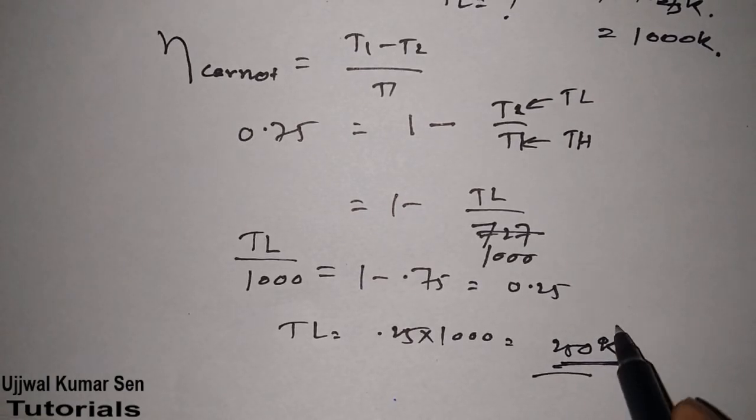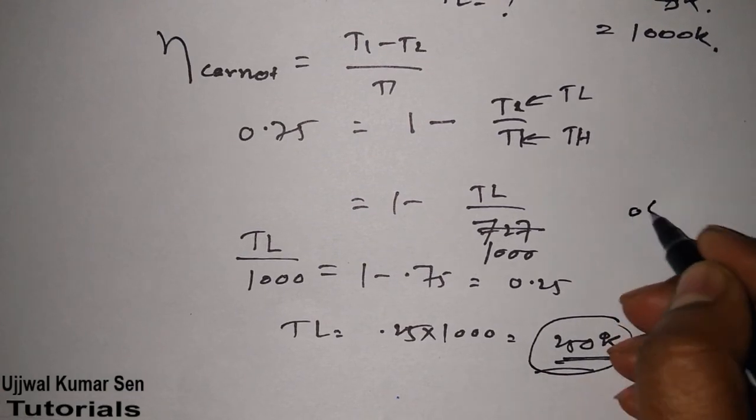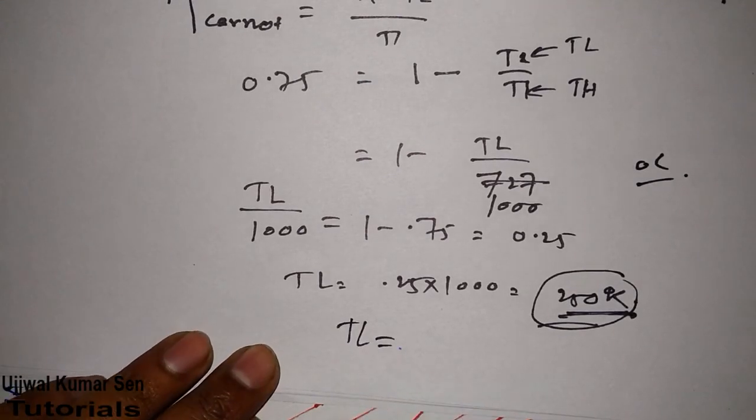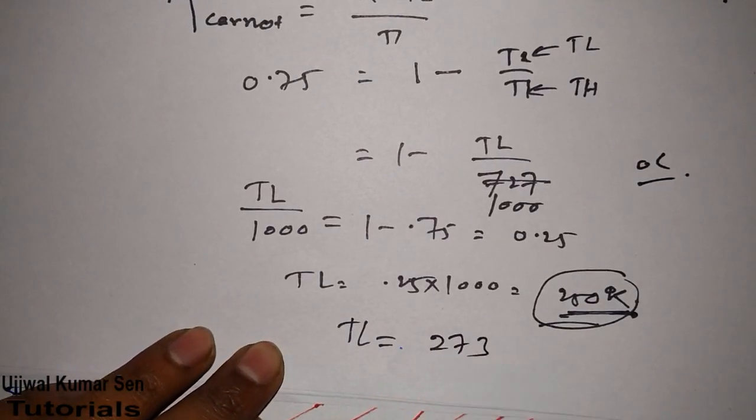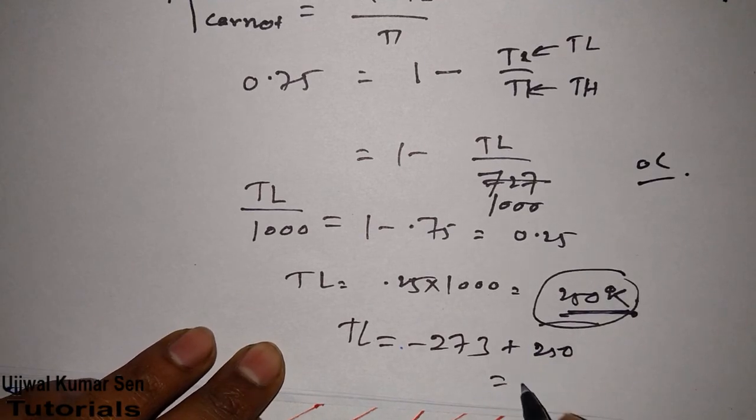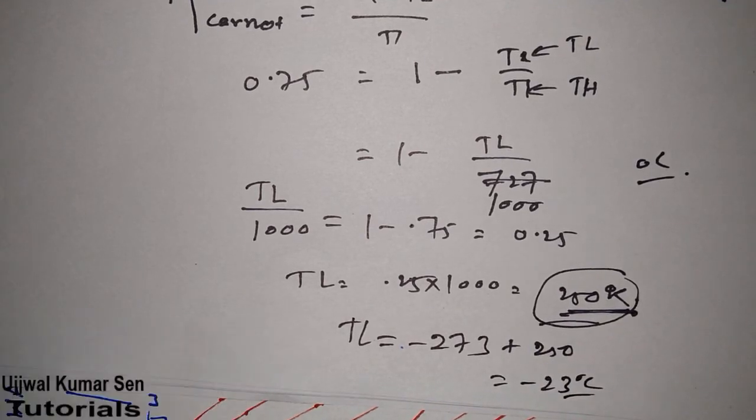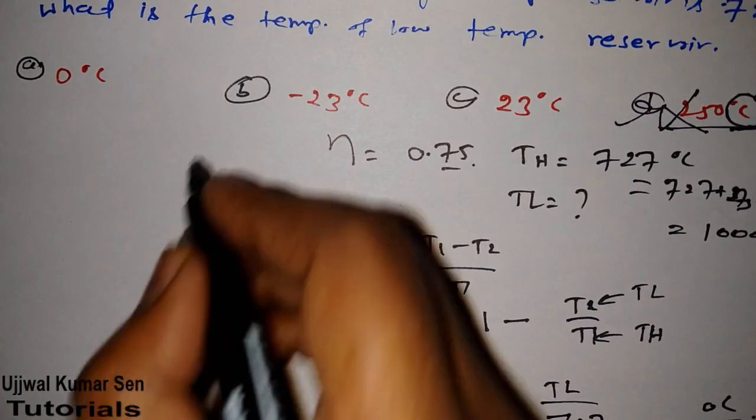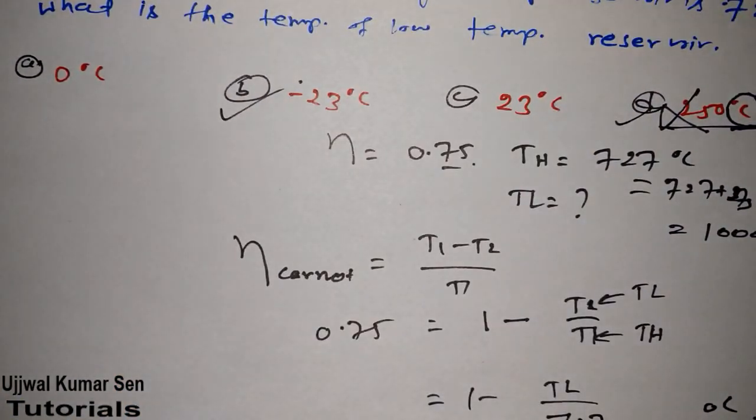You have to convert this into Celsius. Simply, TL equals 250 minus 273, which equals minus 23 degrees Celsius. So the right answer is minus 23 degrees Celsius.